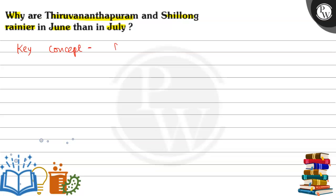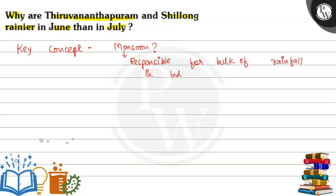The key concept responsible for the bulk of rainfall in India is the monsoon. In India, the majority of rainfall comes from the monsoon. If we talk about the monsoon, they are a type of wind — specifically, a seasonal type of wind.